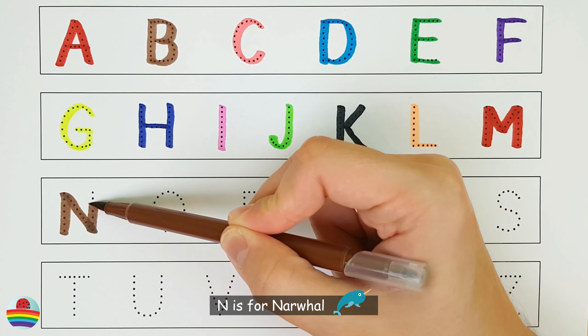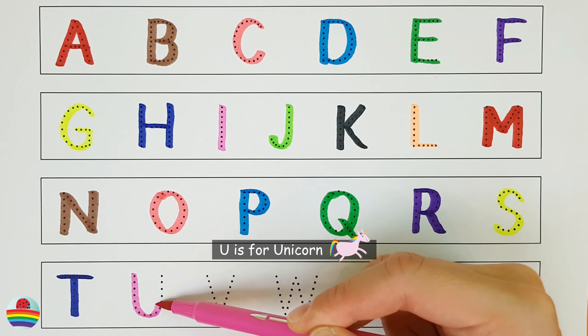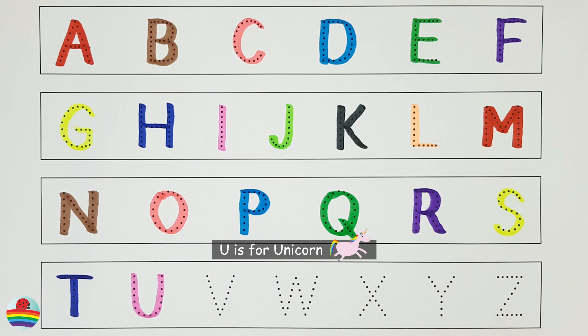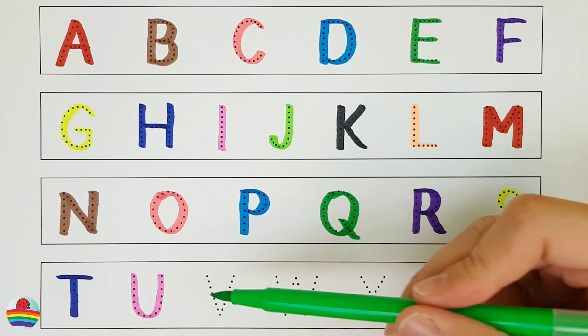U. U is for Unicorn. U. V. V is for Vampire Bat. V.